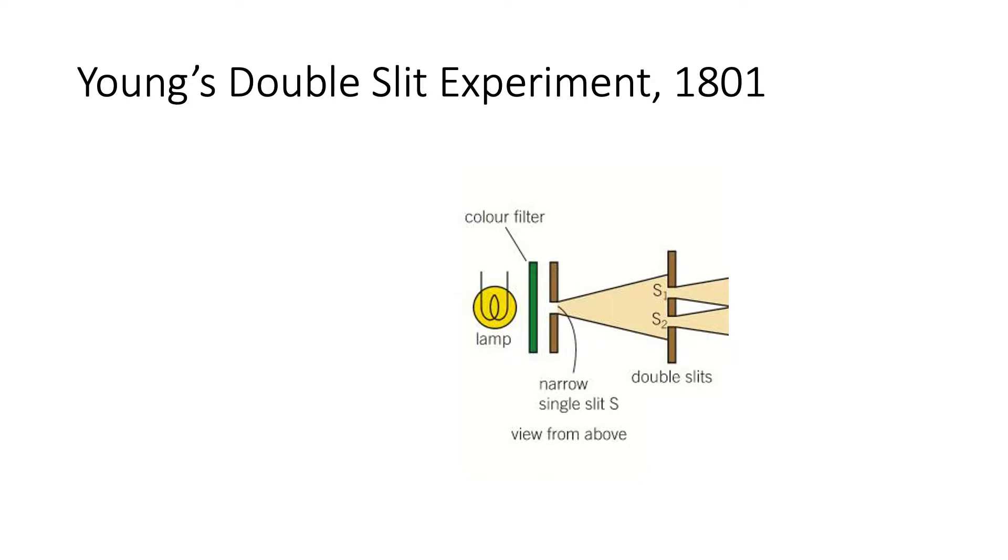Casting your minds back to a previous lesson on Young's double slit experiment, Thomas Young in 1801 demonstrated that light is a wave. First of all he needed to create a coherent light source, so it's got to be monochromatic, a single wavelength. He achieved that by using a filter, since any lamp available at that time would produce lots of different wavelengths mixed together, which doesn't produce an interference pattern.